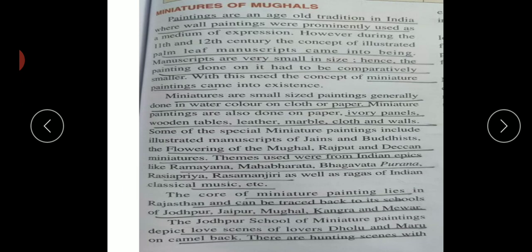Miniatures of the Mughals: miniature means small size. Paintings are an age-old tradition in India; on walls they were a medium through which people could express what situations existed at that time. Palm leaf manuscripts were painted on a comparatively smaller size - hence called miniature paintings. These are small-size paintings done with watercolor on cloth or paper, also on paper, ivory panels, wooden tablets, leather, marble walls, etc.